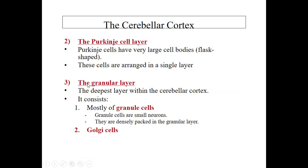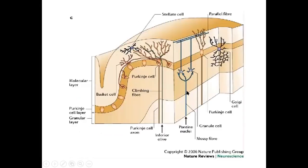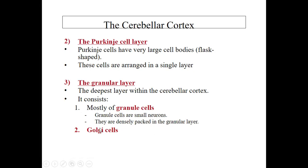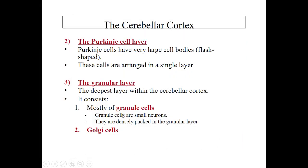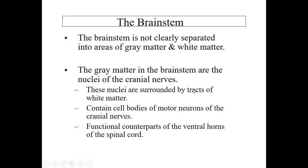The granular layer is the deepest layer within the cerebellar cortex. Two types of cells are present: mostly granule cells, which are densely packed, and also Golgi cells. So in the cerebellar cortex we have the molecular layer, Purkinje cell layer, and granular layer.